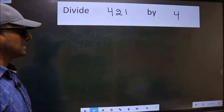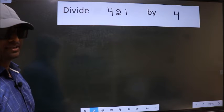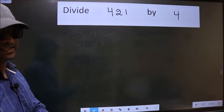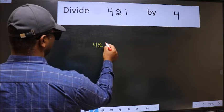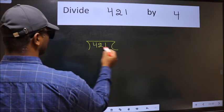Divide 421 by 4. To do this division, we should frame it in this way. 421 here and 4 here.